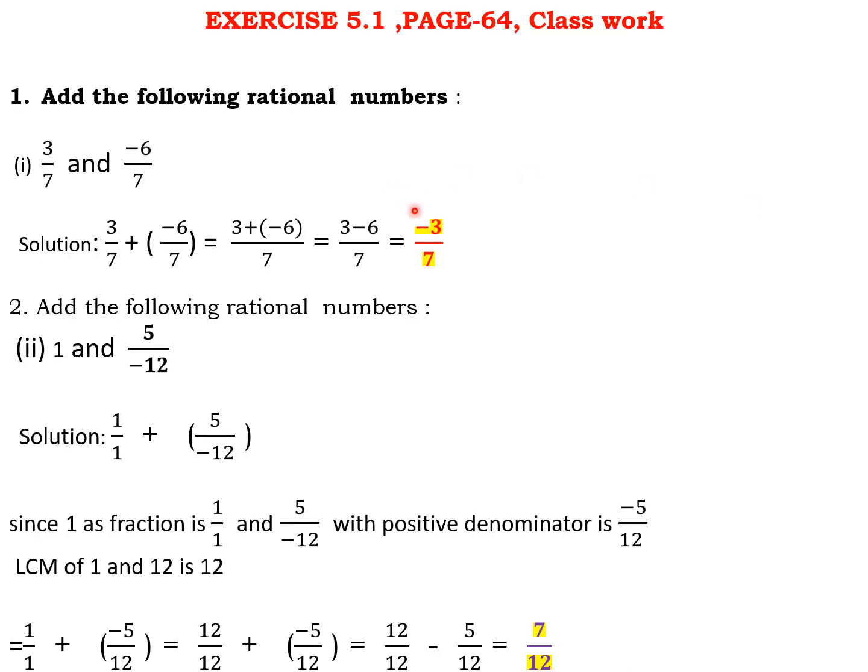Let us see some questions of your exercise 5.1 from page 64. This is also your classwork. The first question is add the following rational numbers: 3/7 and minus 6/7. These are like ones. Simply adding 3 plus minus 6, plus and minus together will give 3 minus 6. So 3 minus 6 by 7 will be minus 3/7.